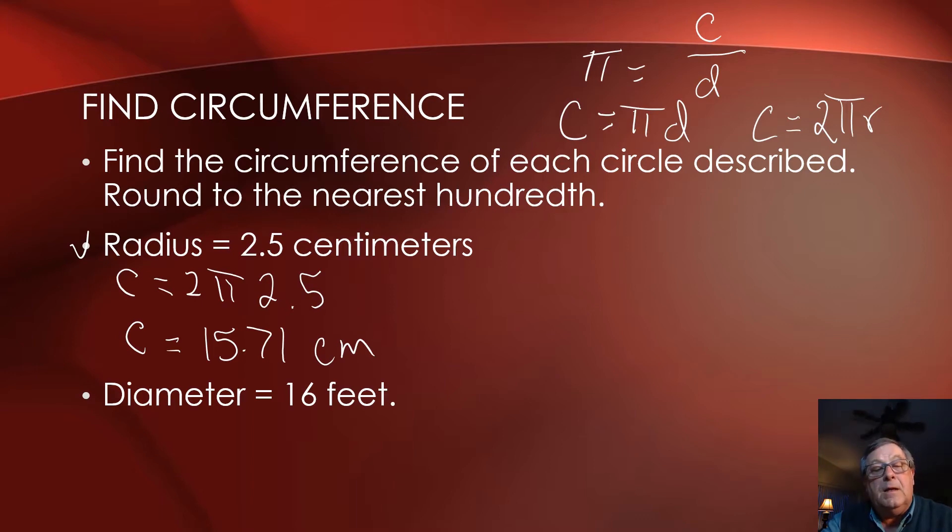In the second example, we've got diameter. The diameter of this circle is 16 feet. What is the circumference? The circumference is equal to π times the diameter, which is 16 feet, so our circumference rounded to the nearest hundredth is π times 16, or 50.27 feet.